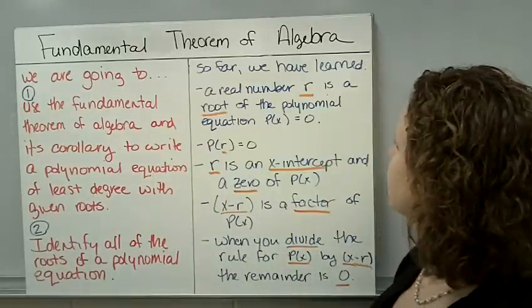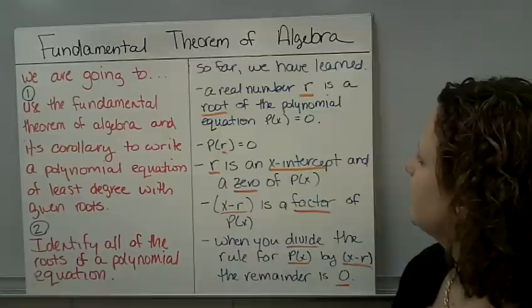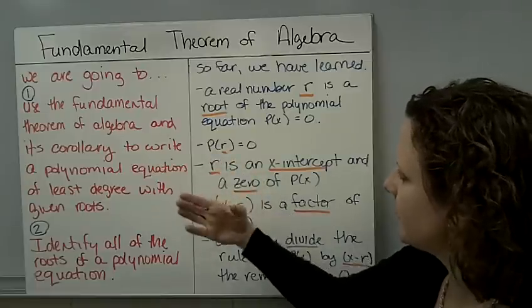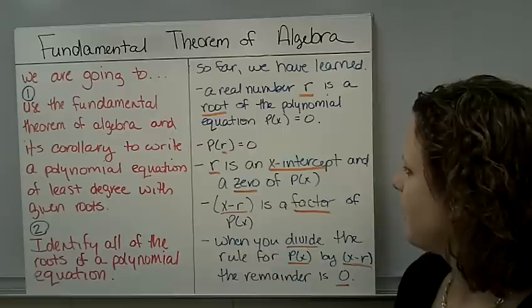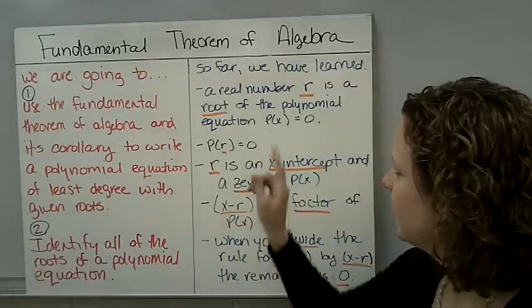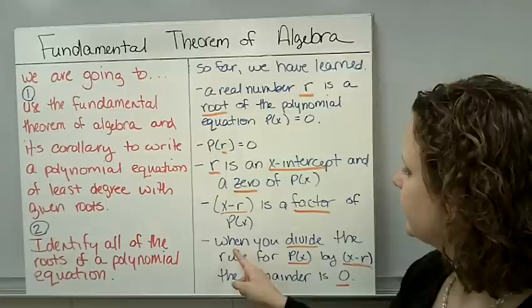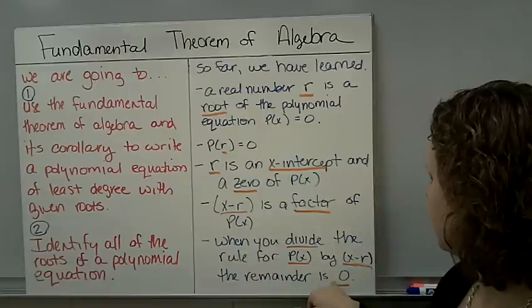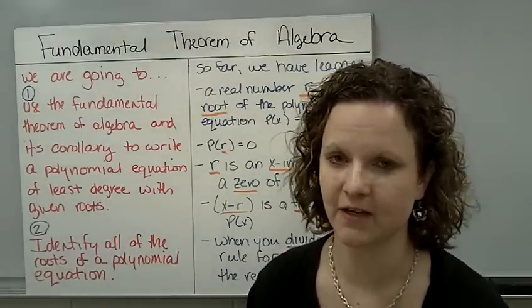So far, we have learned these things. First of all, a real number, which is r, is a root of the polynomial of the equation p(x) = 0. If you plug in r for the polynomial, evaluate it, you're going to get a remainder of 0. r is an x-intercept and a zero of the polynomial. So if you graphed it, where the graph crosses the x-axis is r. It's an x-intercept and a zero and a root of the polynomial. x minus r is a factor of the polynomial. And when you divide the polynomial for p(x) by the factor, your remainder is 0. That's a review of what we've done so far in this unit. So just to remind you of everything, because we're using everything that we've learned.